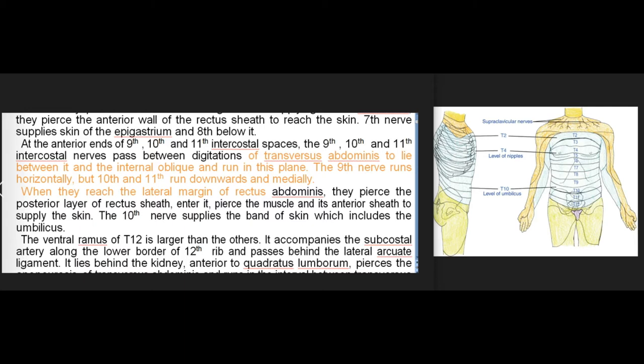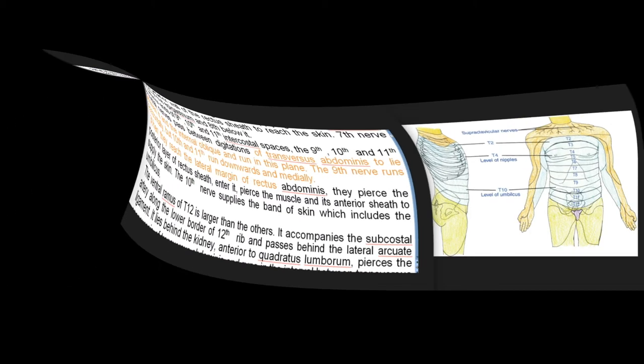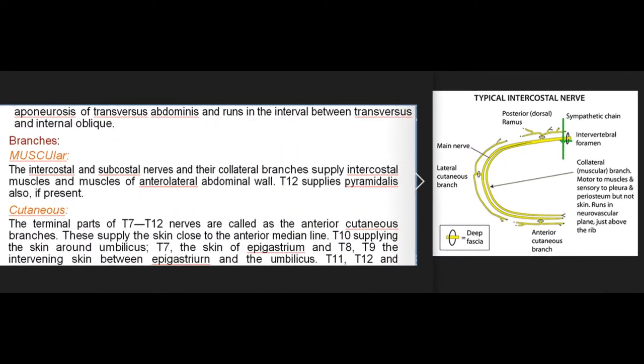The ventral ramus of T12 is larger than the others. It accompanies the subcostal artery along the lower border of the 12th rib and passes behind the lateral arcuate ligament. It lies behind the kidney, anterior to quadratus lumborum, and pierces the aponeurosis of transversus abdominis and runs in the interval between transversus and internal oblique.